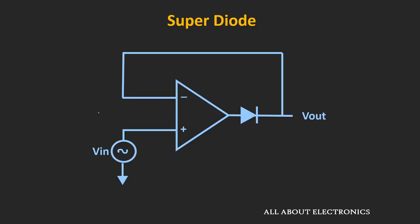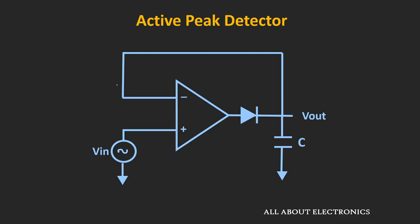We have already talked about this precision diode circuit in the previous video of the precision rectifier. This circuit behaves like an ideal diode, and just by connecting the capacitor at the output terminal, it will become the peak detector circuit. It works exactly the same way as the previous circuit, except the fact that there is no voltage drop across this diode.